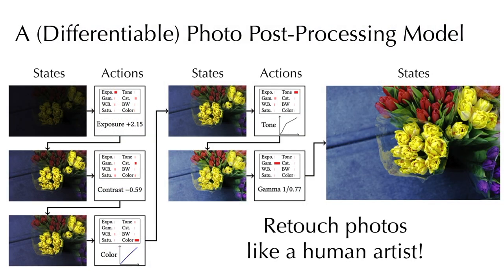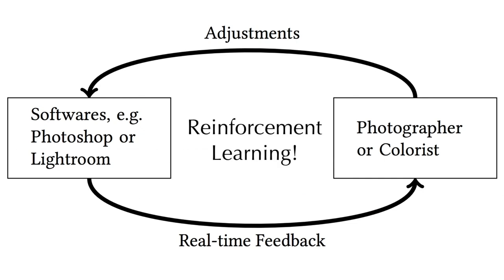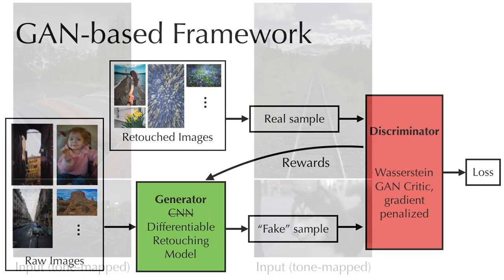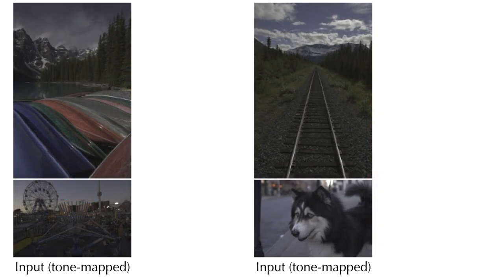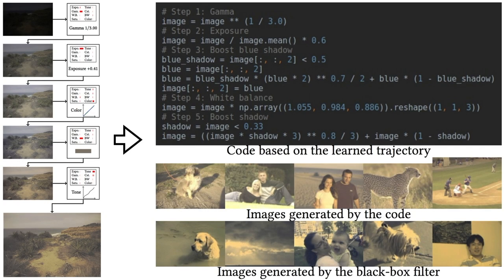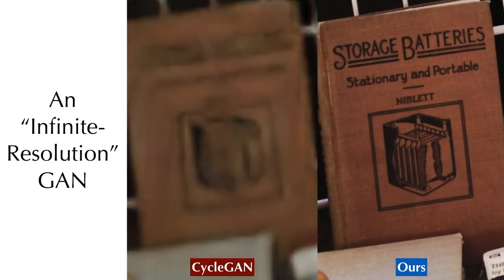Our human-understandable photo retouching model can be learned using reinforcement learning and GANs. It not only generates good photos, but also the steps to get those photos, so that we can program artistic styles. In addition, our system has infinite resolution.